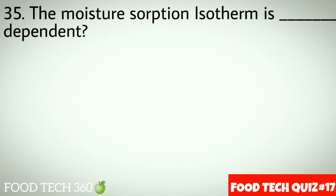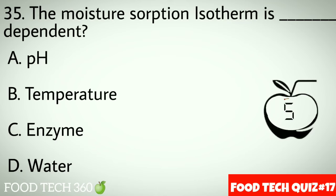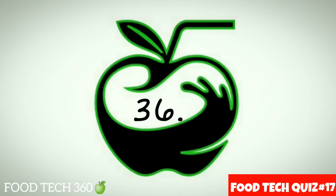Question number 35: The moisture sorption isotherm is dash dependent. Options: A. pH, B. Temperature, C. Enzyme, D. Water. Correct answer: B. Temperature.